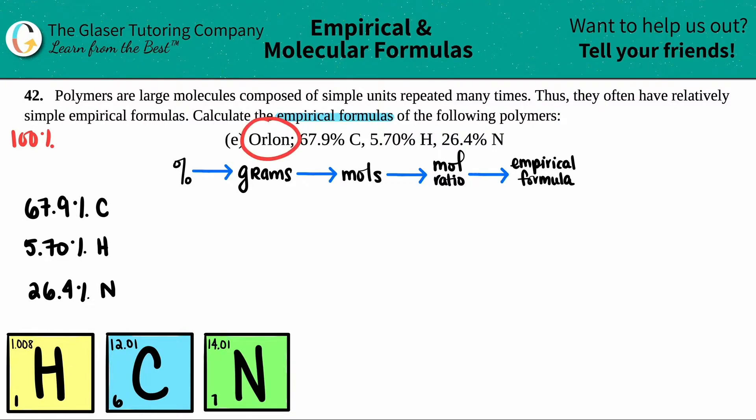But now if the total percent is 100%, I can assume that the gram sample that I have of this Orlon was also 100 grams. So the total percentage equals the total amount of grams. If that's the case, the individual percentages equal the individual grams. So in this case, to go from percents to grams, your percent just equals the amount of grams you got. Instead of saying 67.9% carbon, that's 67.9 grams of carbon. I now have 5.70 grams of hydrogen, and I have 26.4 grams of nitrogen. And the first part is done.